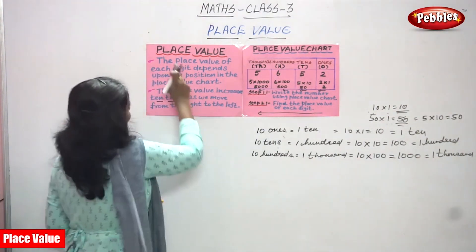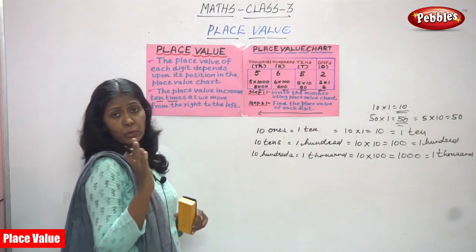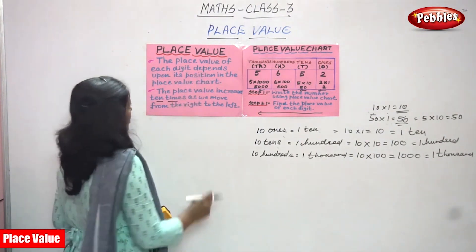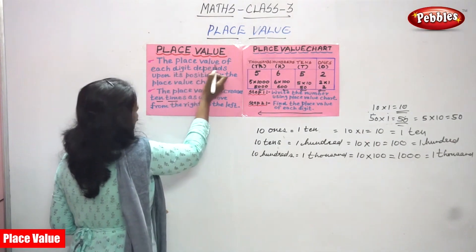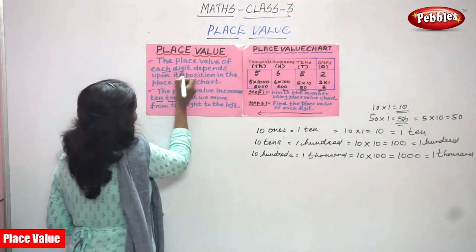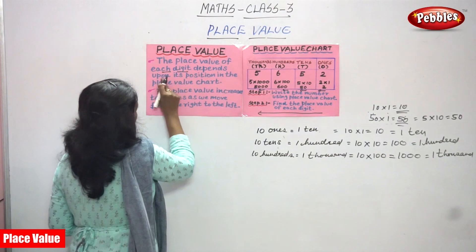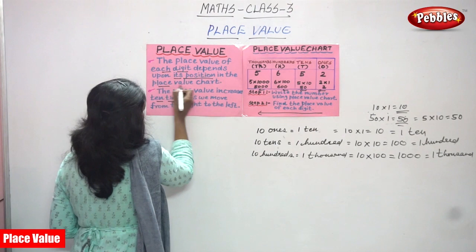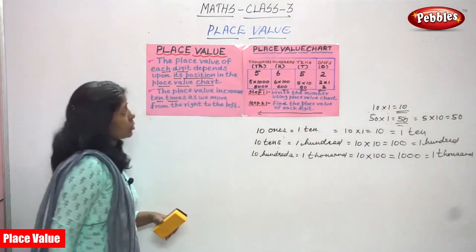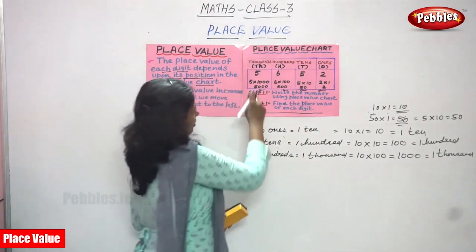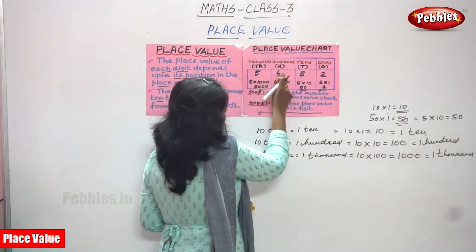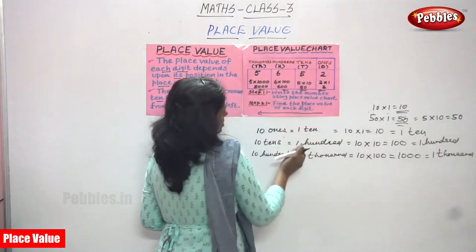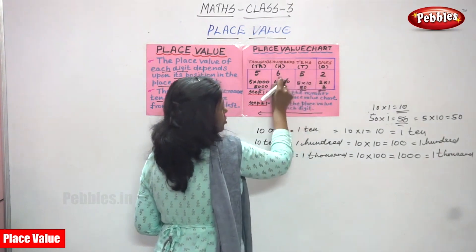Let me repeat once again. Place value: the place value of each digit depends upon its position in the place value chart. For example, the number 5652 — each of these is a digit: 5, 6, 5, and 2 are all digits.